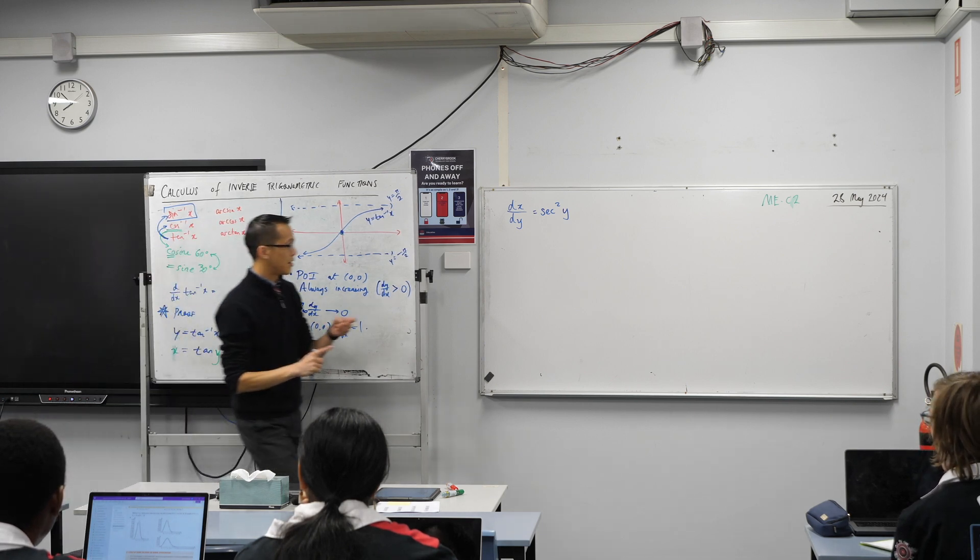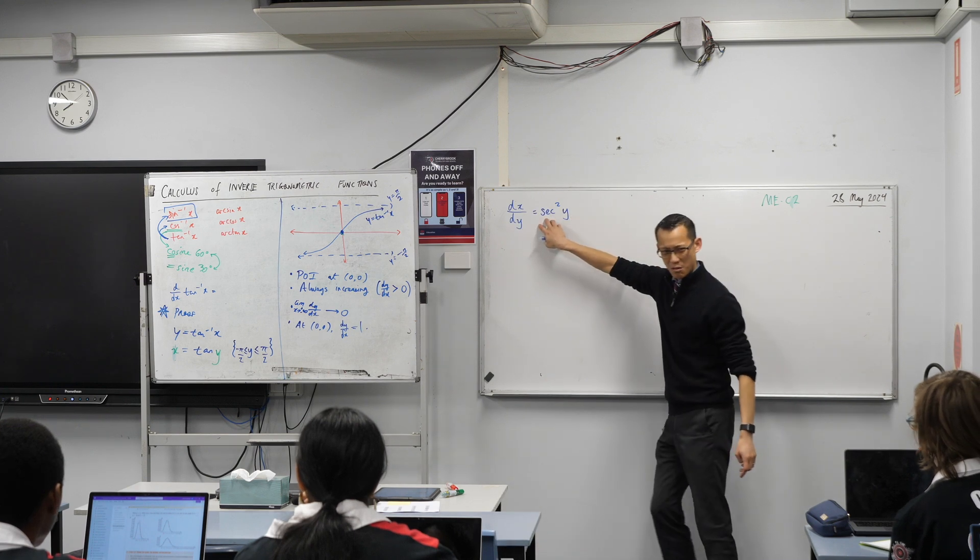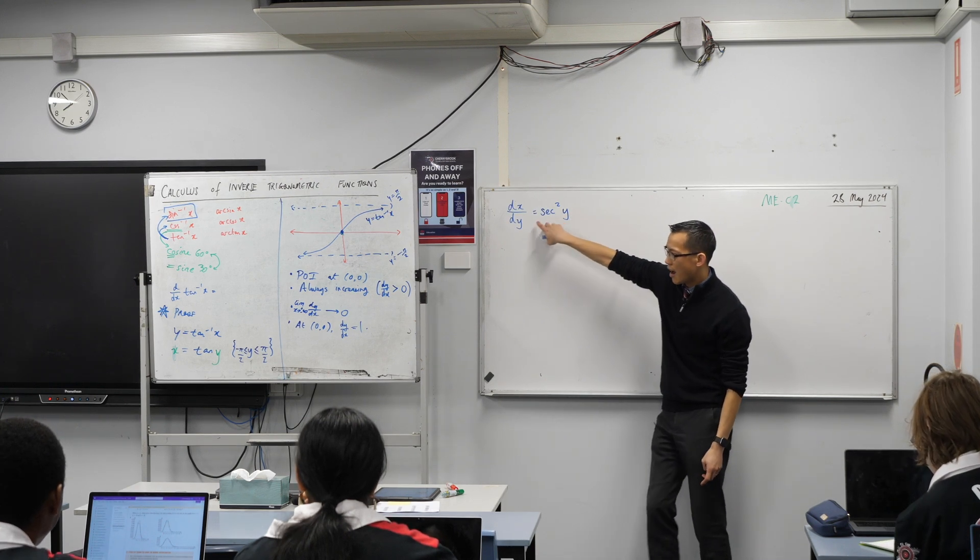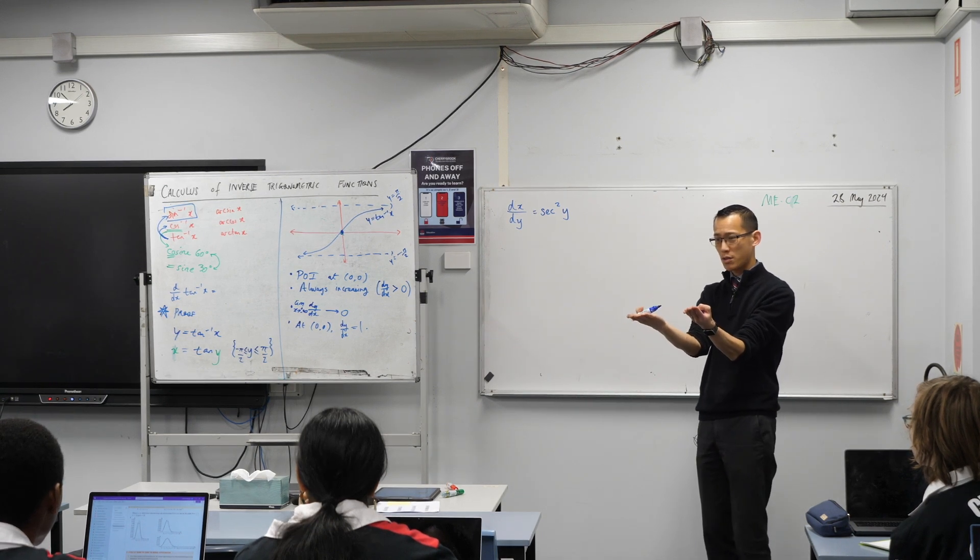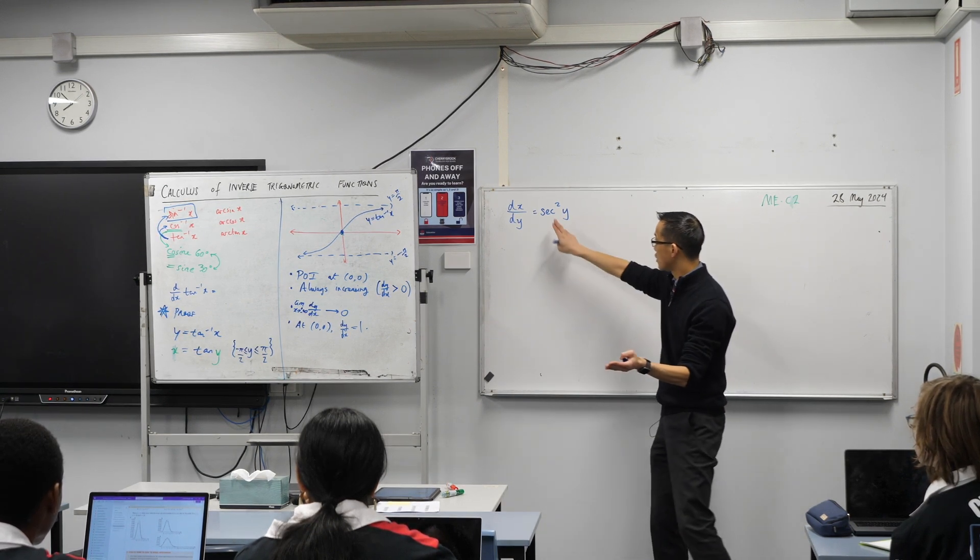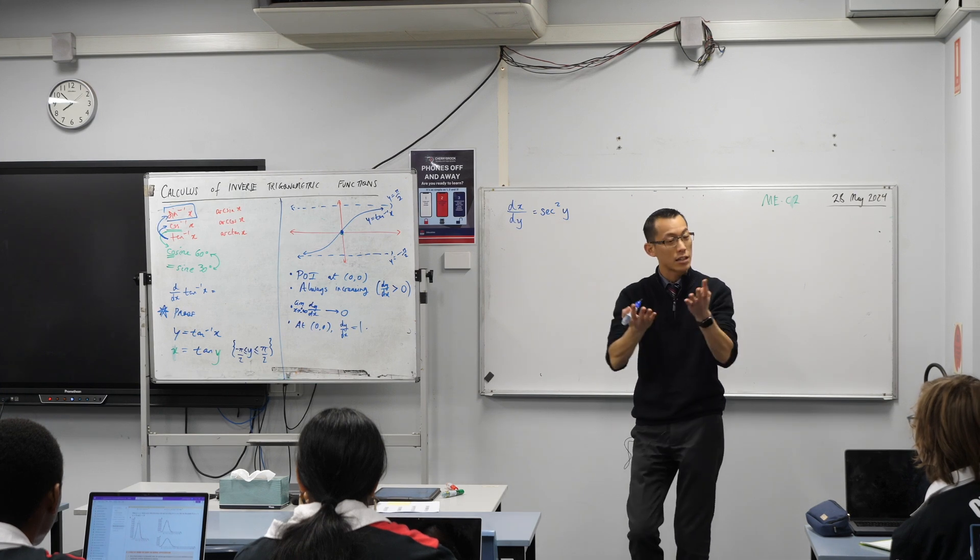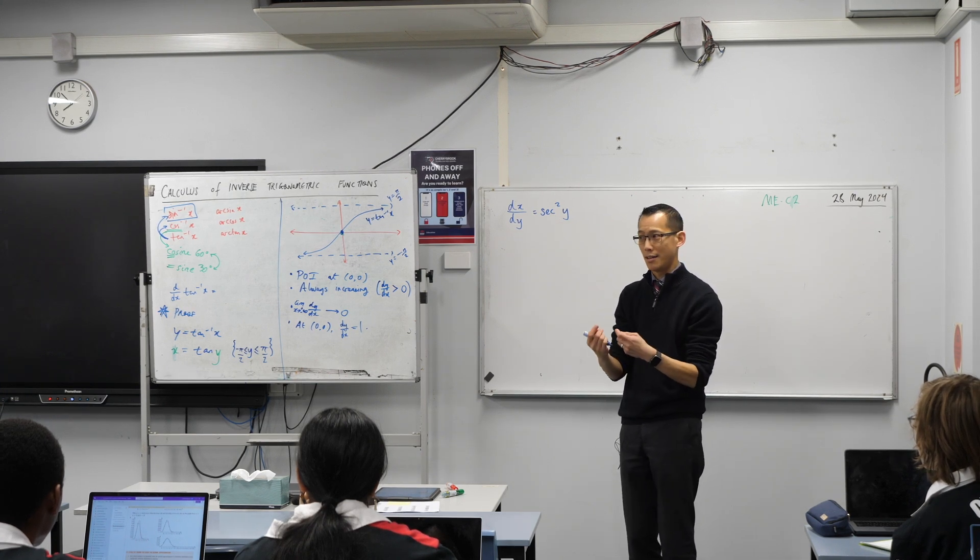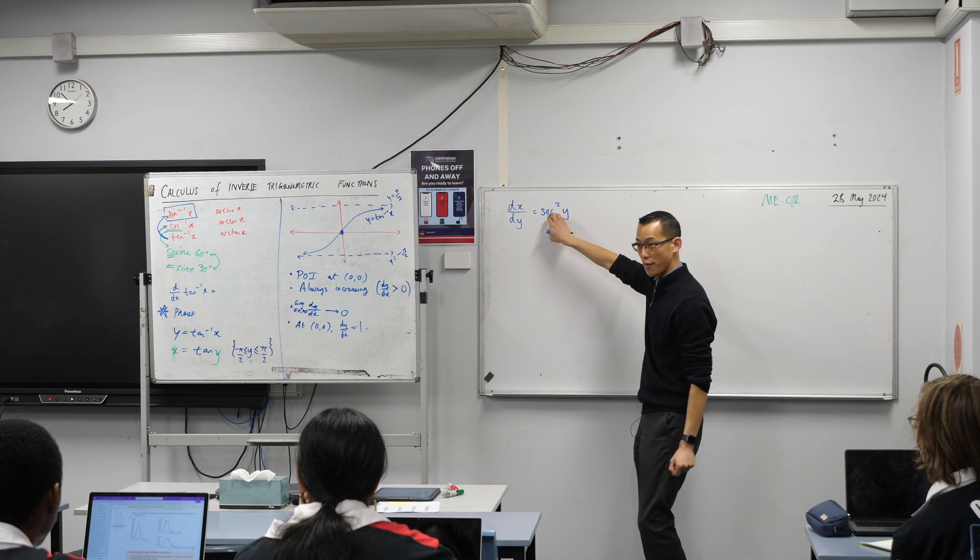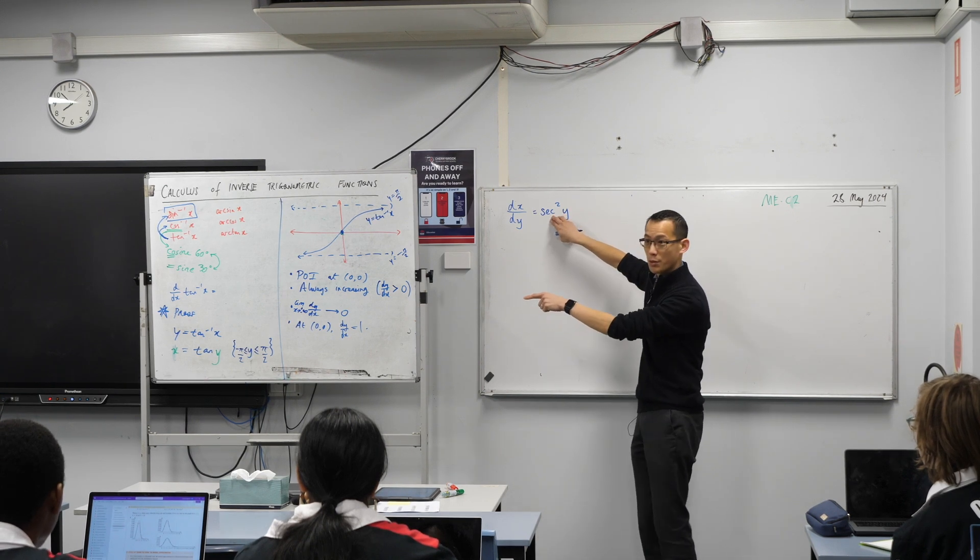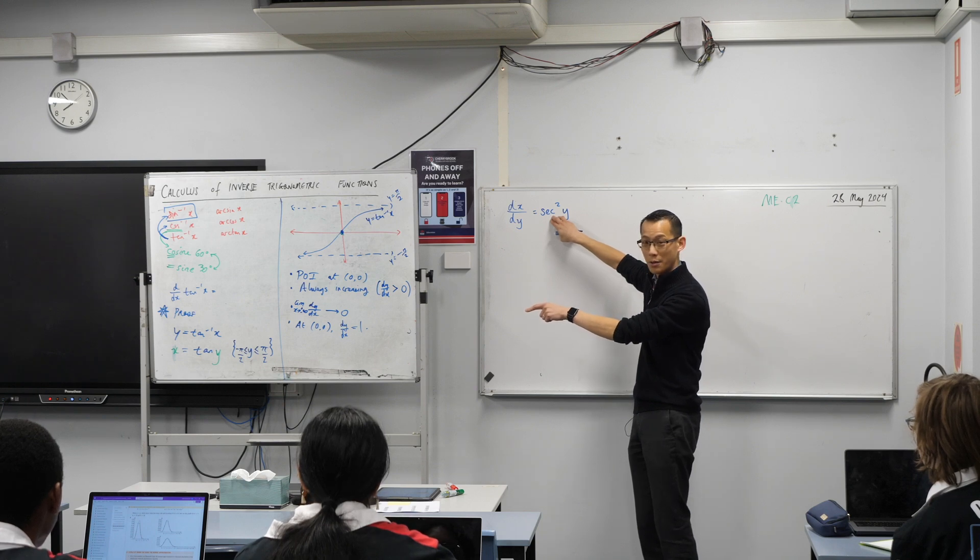The second problem is, this is all in terms of sec, which is weird and gross. I've got everything in terms of tans over there. So these two problems of y's instead of x's and sec instead of tan, I can solve these in one hit. There's an identity, you learned it last year, that will help you get from here back into more familiar territory. Can anyone help me with this one?